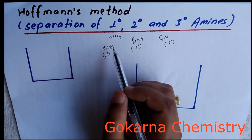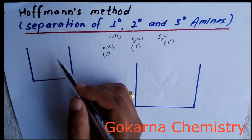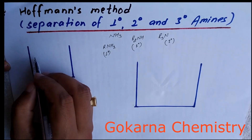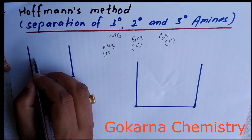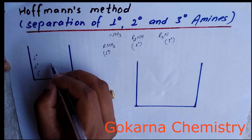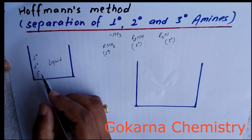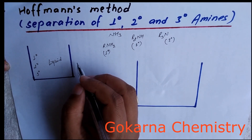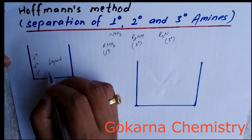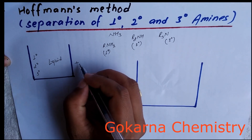If three hydrogens are replaced by three alkyl groups, this is a tertiary or third degree amine. We have to separate first, second, and third degree amines by Hofmann's method, which is a very convenient and suitable method. We take primary, secondary, and tertiary amines in separate vessels — all amines are in liquid state. First of all, we add diethyl oxalate to these vessels.